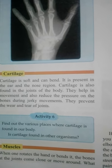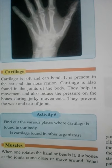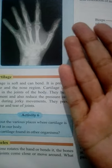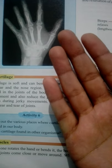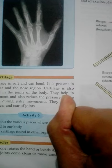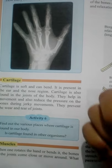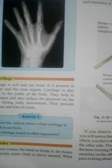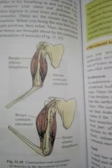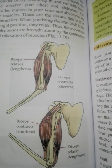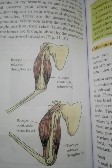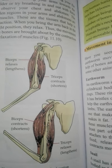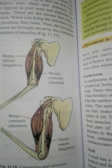Next is muscles. When you rotate or bend the hand, the bones at the joints come close or move apart. When we bend the arm, bones become close to each other, and then move away. This movement happens because there is bending of bones.